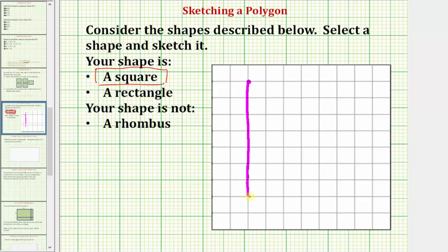So from here, we'd go over to the right seven units: one, two, three, four, five, six, seven, and then we would form our square.